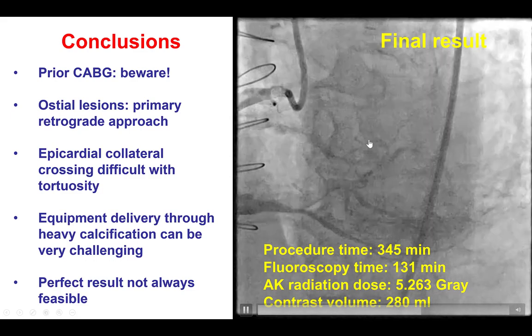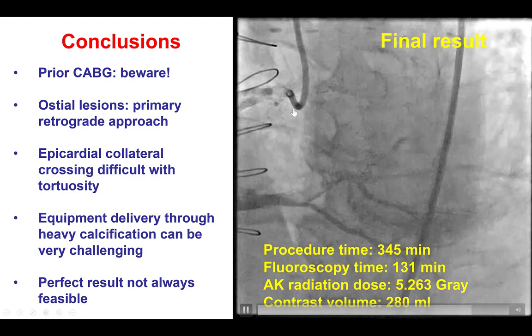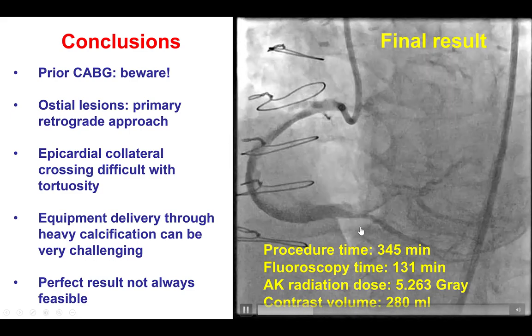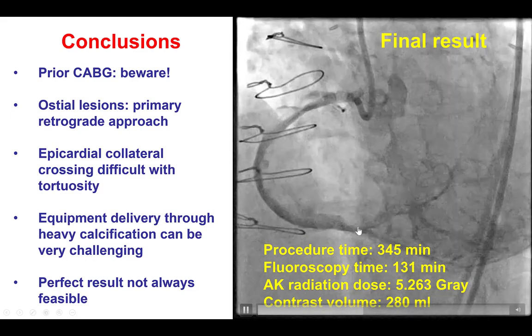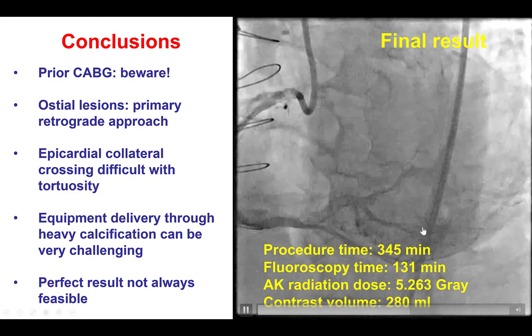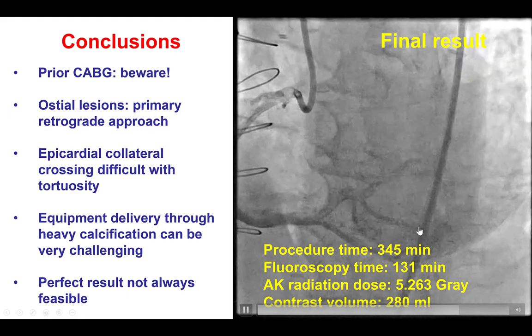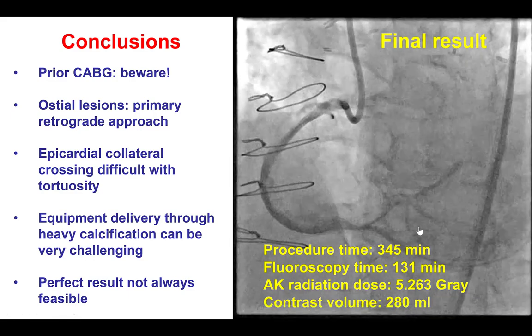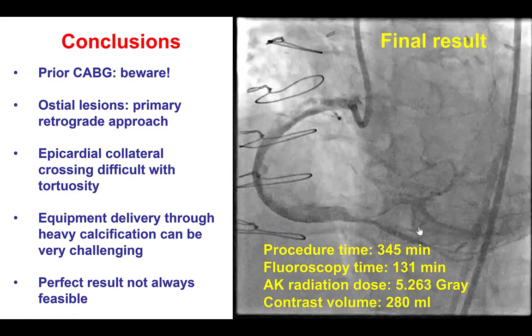The plan was to assess the patient's symptoms and potentially have him come back for a repeat attempt to re-canalize the right posterolateral if he continued to have significant symptoms.